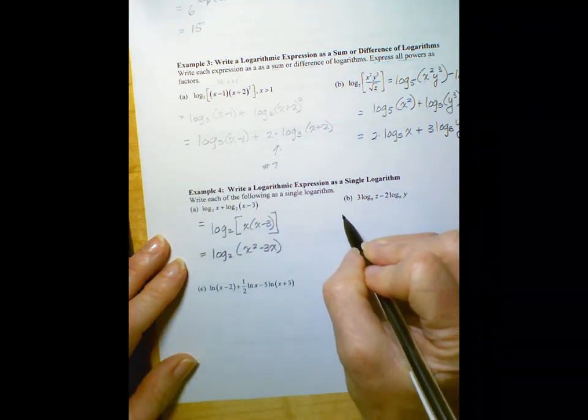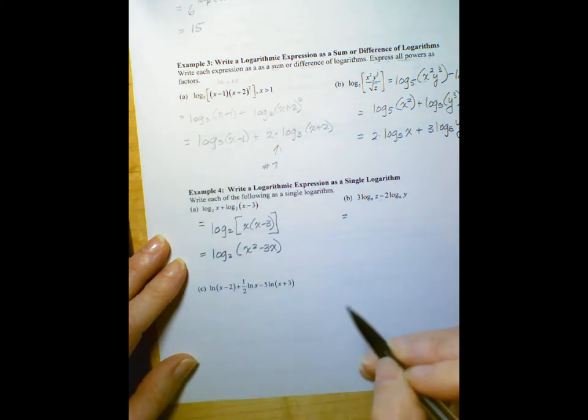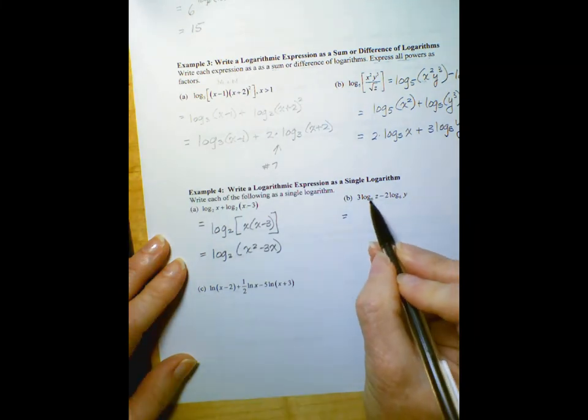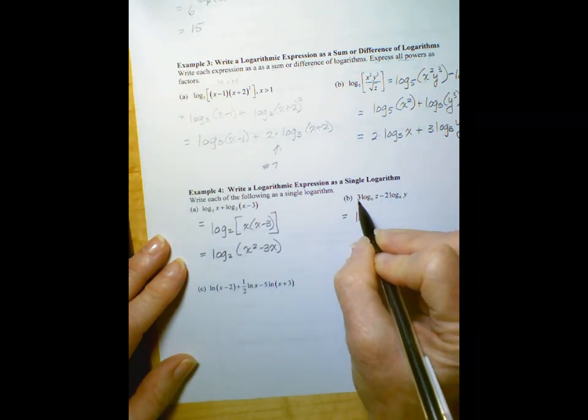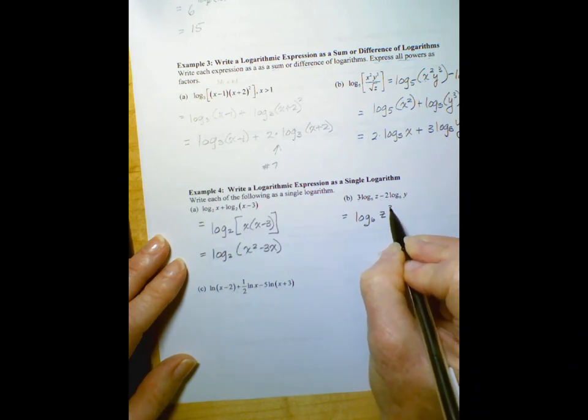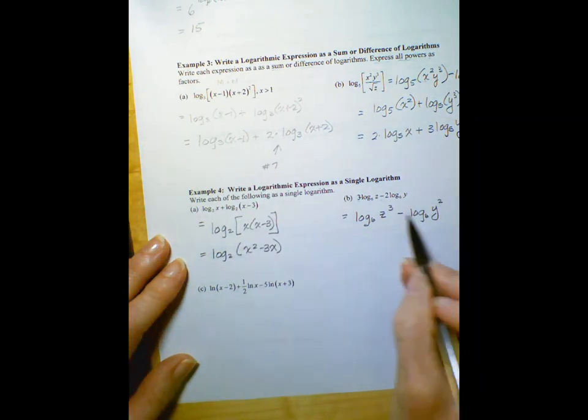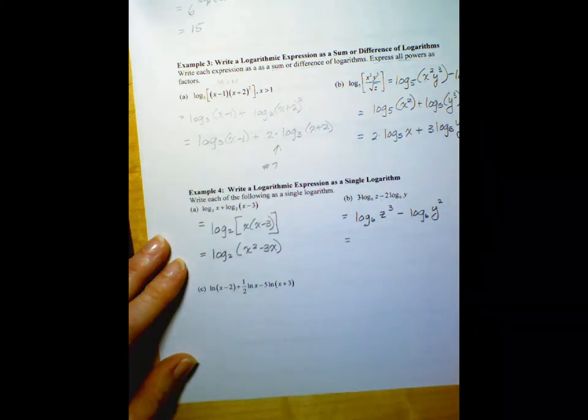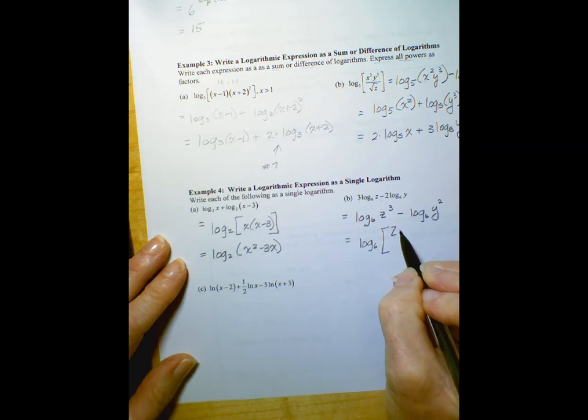For the next one, this is subtraction. But notice we have three times and two times. If you look back at the property that involved subtraction, you can't have a multiplier out front. So the first thing we have to do is change the factor to a power. Log base 6 of z cubed minus log base 6 of y squared. Now we have log minus log. When you have log minus log, then you can write it as a quotient. Log base 6 of z cubed over y squared.